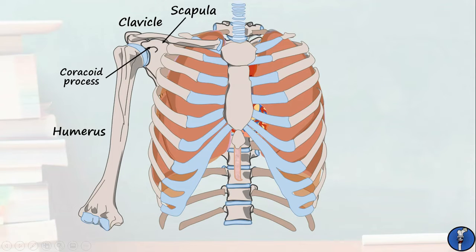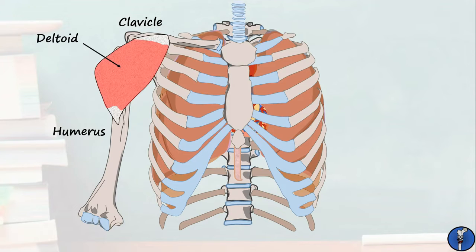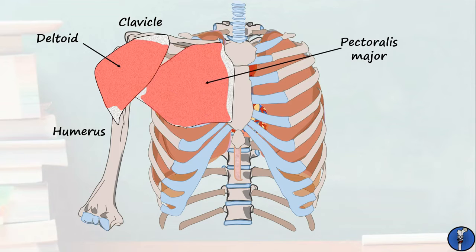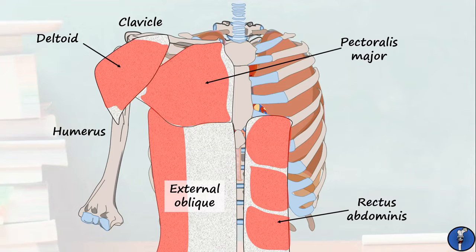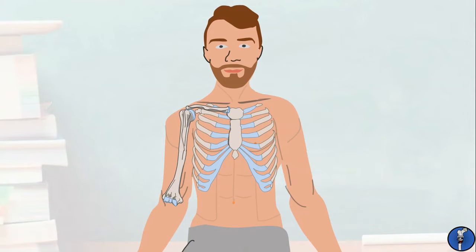Lastly, we have several muscles which are noticeable on the anterior side. These are the round deltoid, which forms the bulk of your shoulder; the chunky pectoralis major; rectus abdominis; and the external obliques, which both insert into a long tendinous structure known as the linea alba. That's a lot of anatomy. Let's break all that down and see how we can relate it to the surface anatomy. As we go along, I suggest you have a feel of these structures on yourself — it'll help you remember them all, and prove why we call it surface anatomy.